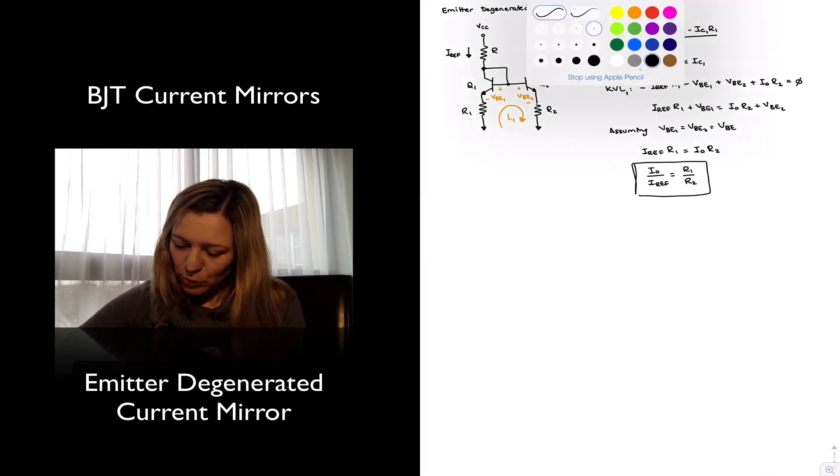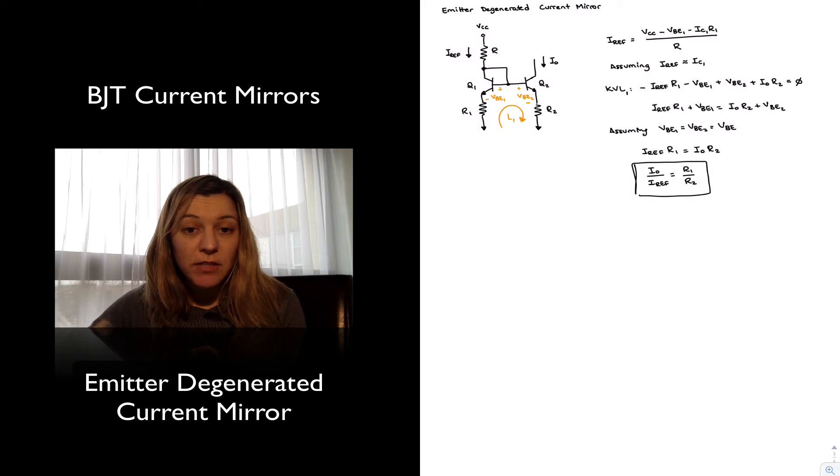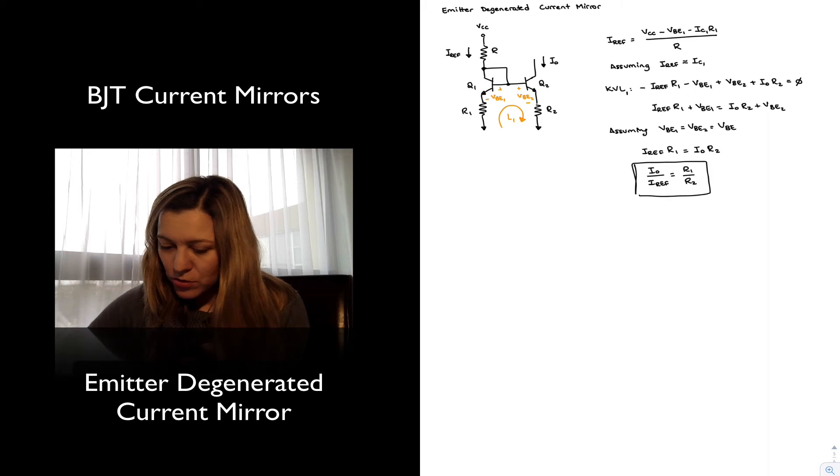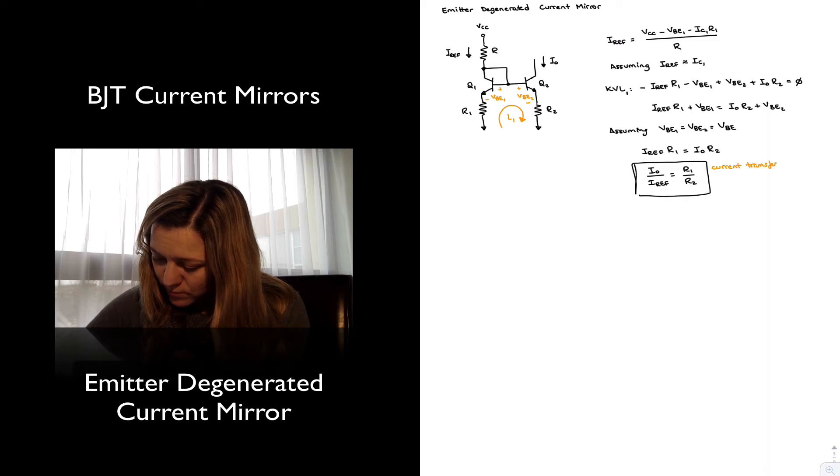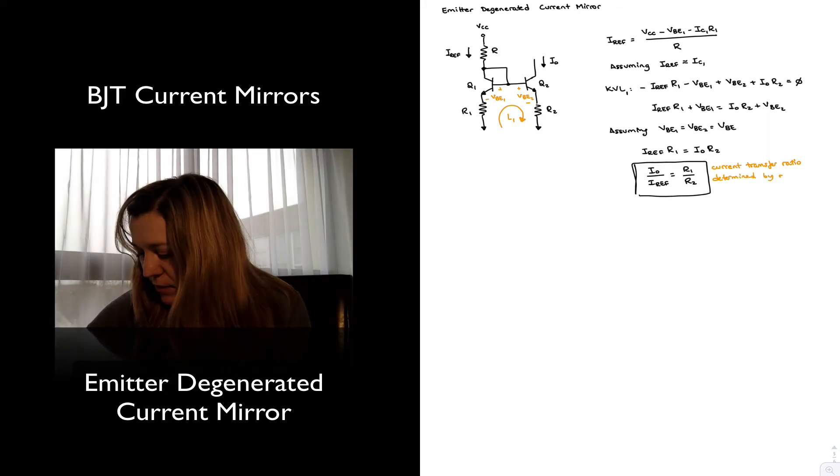And so the importance of this result is that notice that the current ratio is now determined by the ratio of two external resistors, so this gives us the possibility of adjusting the output current by varying resistors. So current transfer ratio determined by resistor ratio.